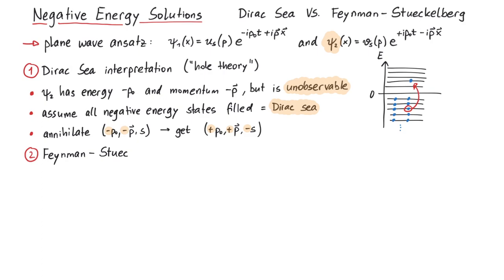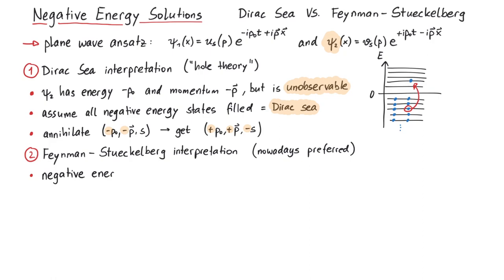Now onto the second interpretation, the Feynman-Stuckelberg interpretation. Nowadays, this is the preferred way to look at negative energy solutions. It starts with a bold premise. We say that the negative energy solutions of the Dirac equation actually travel backwards in time. Mathematically, this is equivalent to a positive energy traveling forwards in time, since multiplying two negative numbers is the same as multiplying the same two positive numbers.